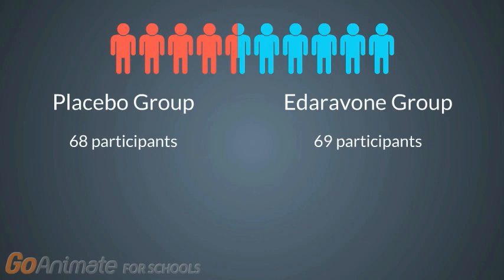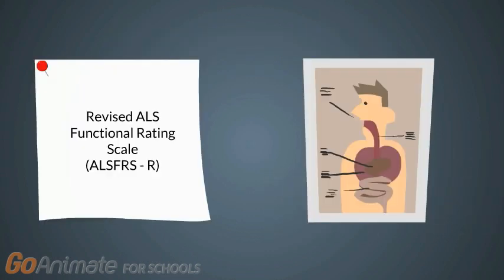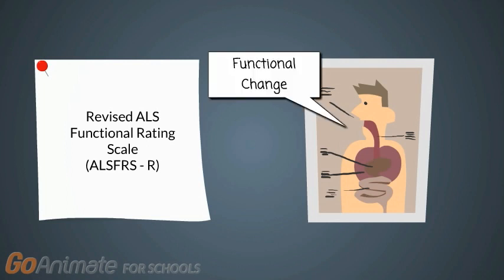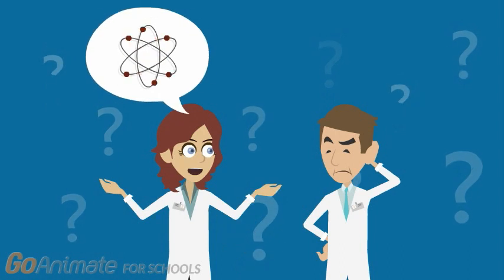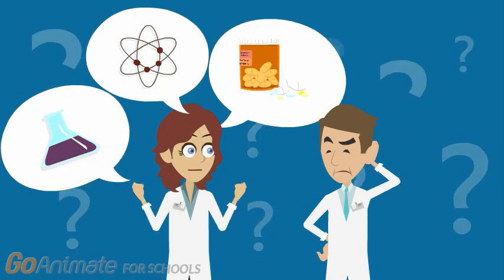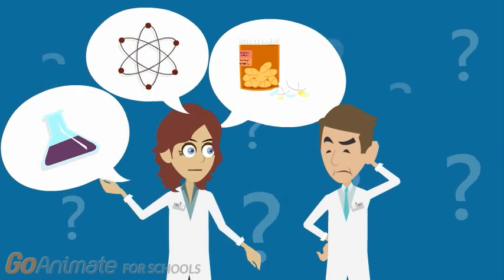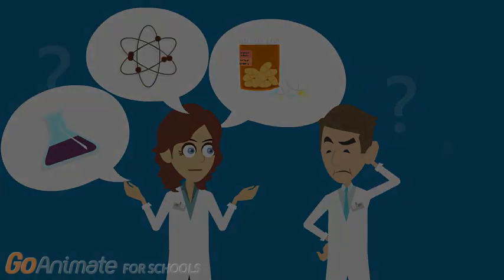After six months of treatment, the edaravone-treated group had a 33 percent reduction in their functional decline, as determined by the revised ALS Functional Rating Scale — a scale that monitors functional change in ALS patients over time. However, since the mechanism is still unclear, many researchers still question the efficacy of the drug.